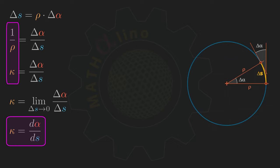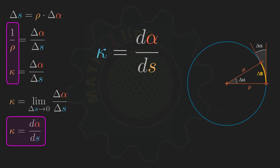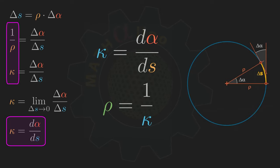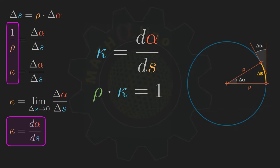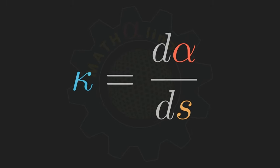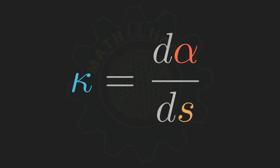This limit, d alpha over ds, is the curvature of the curve at point one. Let us do a recap: we have two formulas for curvature kappa. One is that kappa is equal to d alpha over ds, and the second is that kappa is the reciprocal of the radius of curvature rho. To proceed with our discussion, let us focus on the equation kappa is equal to d alpha over ds and capture this in the xy plane.